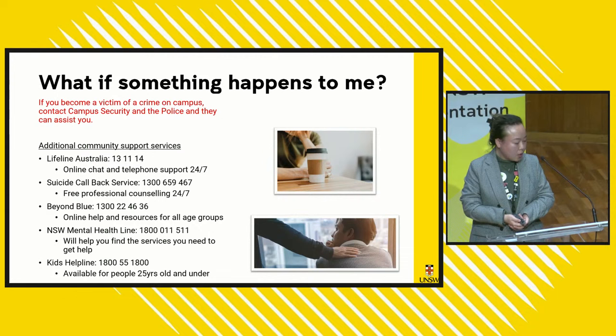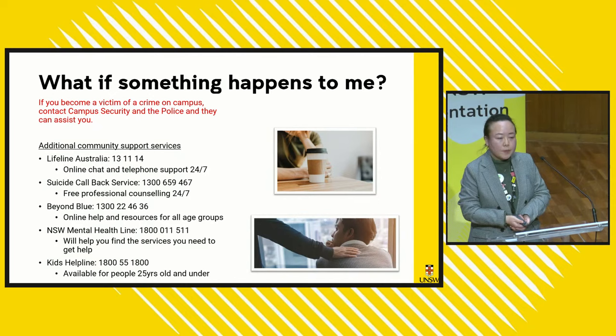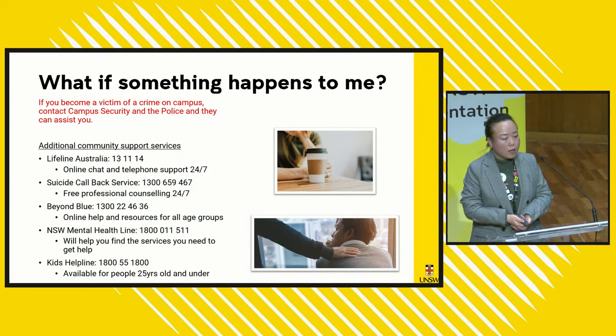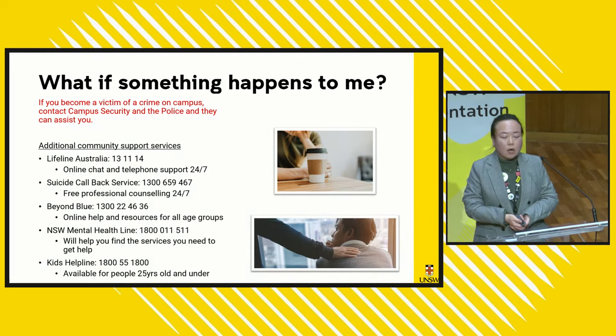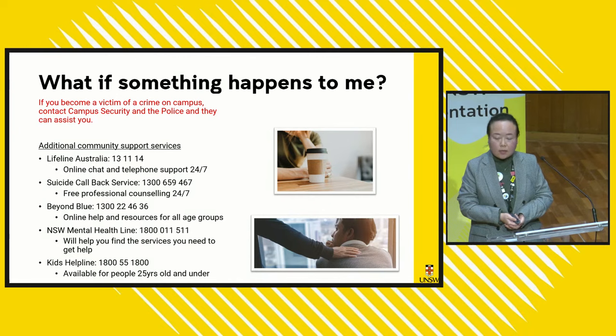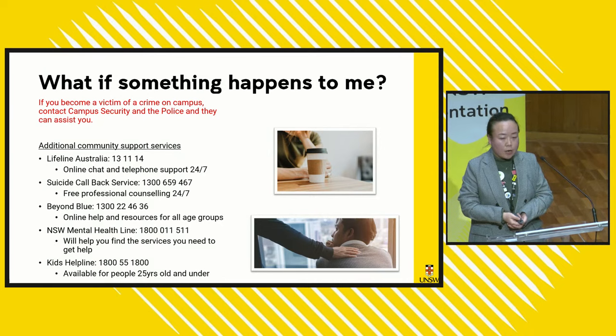If you become a victim of crime on campus, it is important for you to report it to UNSW campus security, who can help put you in contact with NSW Police and also on-campus support services. There are also helpful external community support services — they can put you in contact with the right person or provide free counselling, and their services are confidential. You can find all their contact details on the Stay Safe at UNSW app.